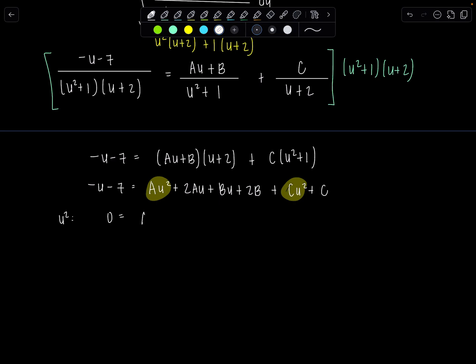A plus c. And then u to the first we've got negative 1u to the first. That must equal that's right 2a plus b. And then my constant term u to the 0 that's negative 7. That equals 2b plus c.